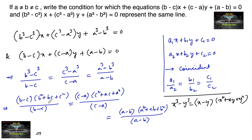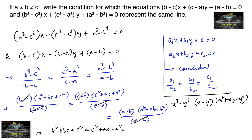The common factors cancel: (b minus c) cancels to give b² + bc + c², (c minus a) cancels to give c² + ac + a², and (a minus b) cancels to give a² + ab + b². Let's consider any two of these equal expressions.